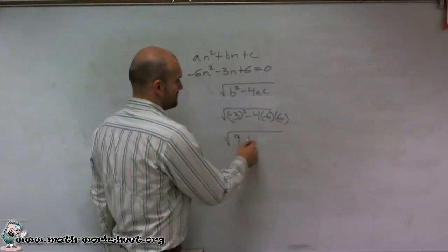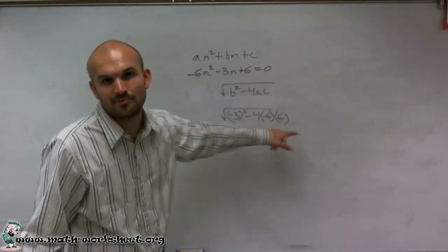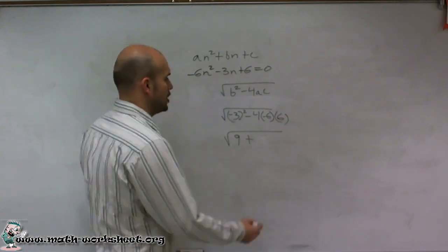And you can see it's actually going to be plus. And then I do 6 times 6, because the two negatives would make it plus. 6 times 6 is 36 times 4, so it looks like it's going to be 144. So 9 plus 144 equals 153.